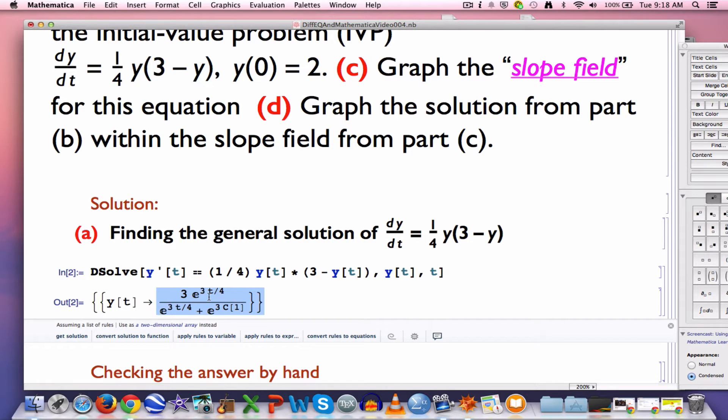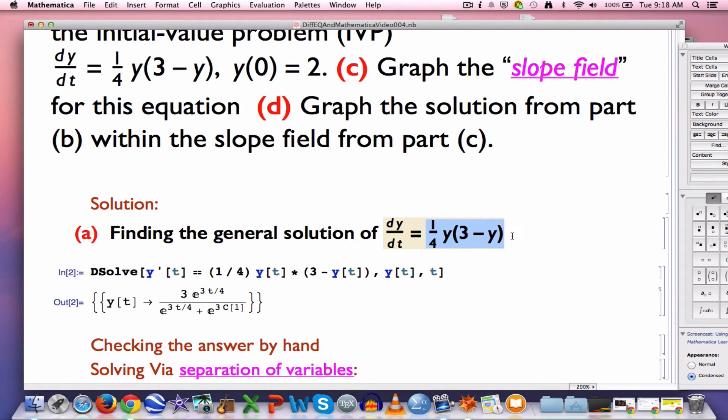Alright, Mathematica is proposing this as the general solution. What does that mean? It means, first of all, that it is a solution no matter what c1 is. In other words, when you substitute this function into the differential equation in both the left-hand side and the right-hand side, that you get the same thing as functions of t when simplified.